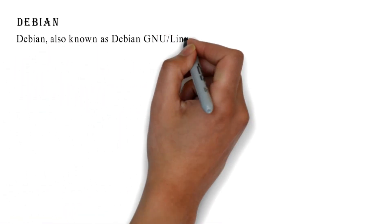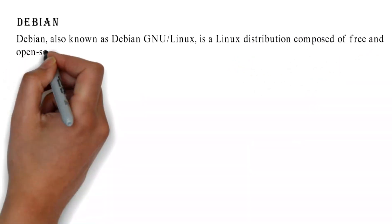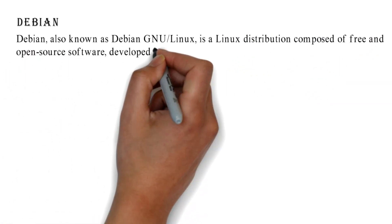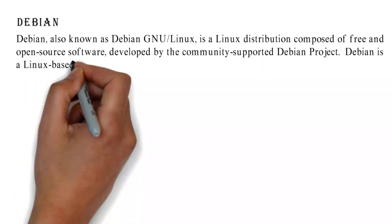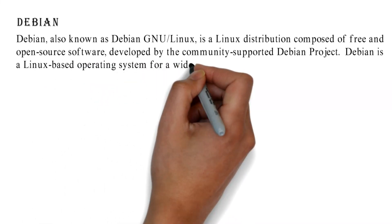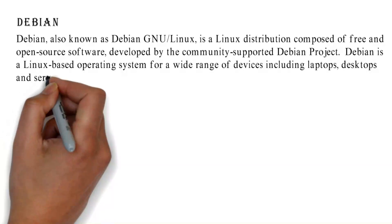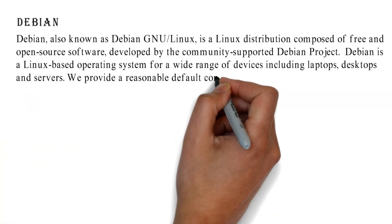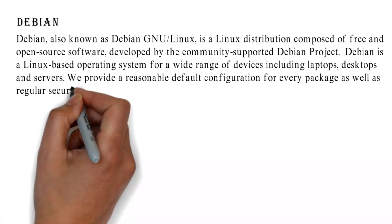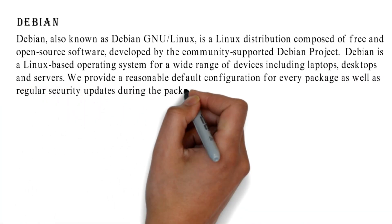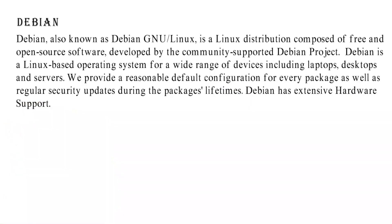Debian, also known as Debian GNU/Linux, is a Linux distribution composed of free and open source software developed by the community-supported Debian project. Debian is a Linux-based operating system for a wide range of devices including laptops, desktops, and servers. It provides a reasonable default configuration for every package as well as regular security updates during the package's lifetime. Debian has extensive hardware support.